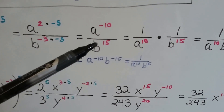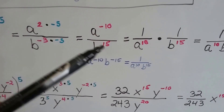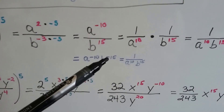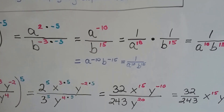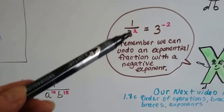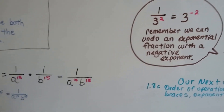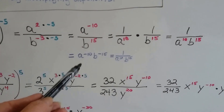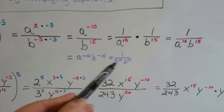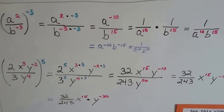Now we also could have taken this b to the 15th, and removed it as a denominator, and just wrote it next to the other ones by putting a negative sign in front of that 15. We can undo this fraction by writing a negative in front of the exponent. So we could have just written it like this. Either way, they both equal the same thing in the end.